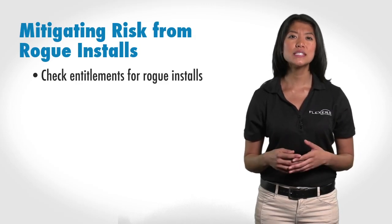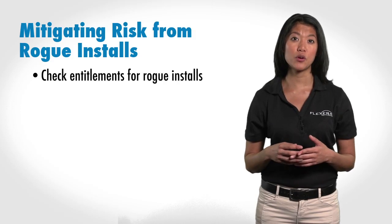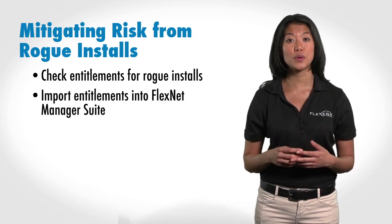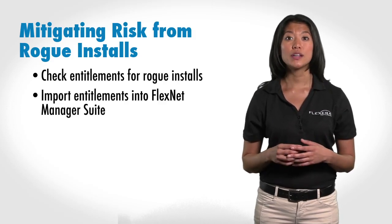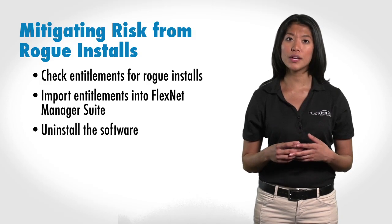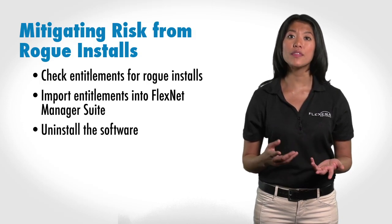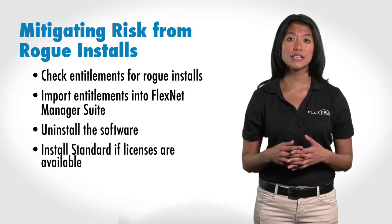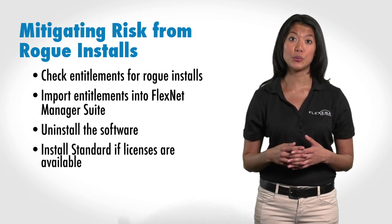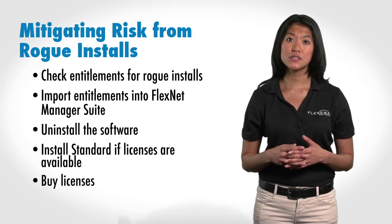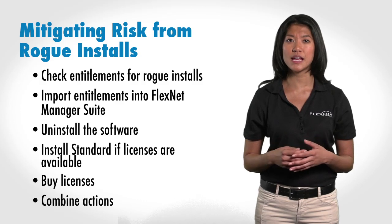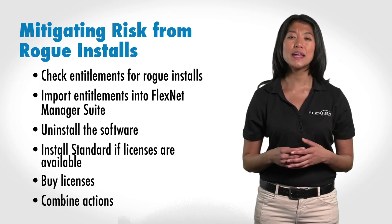We can see if there were entitlements for these rogue installs and import them into FlexNet Manager Suite. We can uninstall them completely, or we can uninstall and then reinstall Design Standard using available licenses in the pool. We can buy licenses for Design Premium, or some combination of these actions, depending on the needs of your organization.